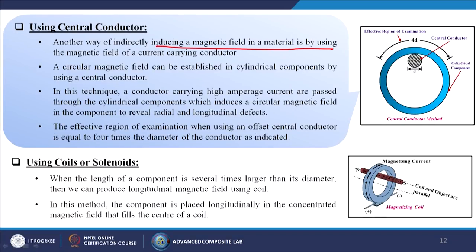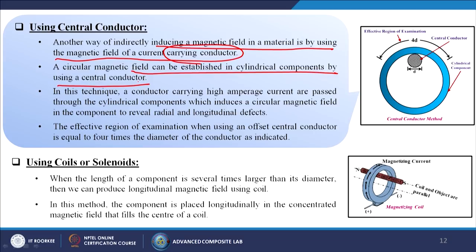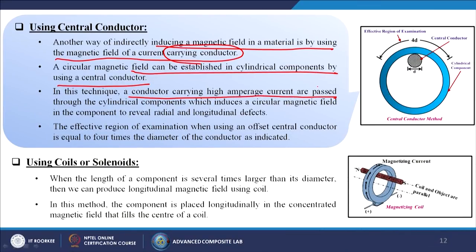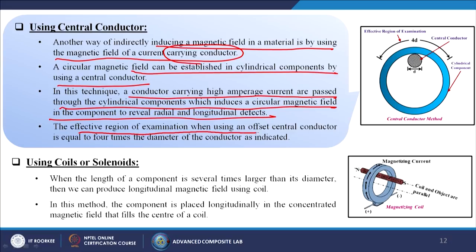Another way of indirectly inducing a magnetic field in a material is by using the magnetic field of a current-carrying conductor — called the central conductor method. A circular magnetic field can be established in cylindrical components by using a central conductor. If we have a cylindrical component to test, we insert a central conductor inside it. In this technique, a conductor carrying high amperage current is passed through the cylindrical component, which induces a circular magnetic field to reveal radial and longitudinal defects. The effective region of examination when using an offset central conductor is equal to 4 times the diameter of the conductor.